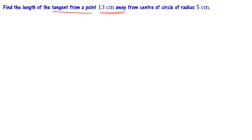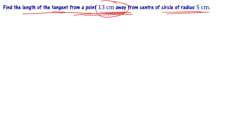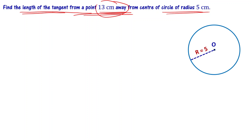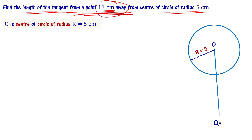Now look at the second problem: find the length of the tangent from a point 13 centimeters away from the center of a circle of radius 5 centimeters. We have a circle centered at O with radius r equal to 5 centimeters, and we mark a point Q that is 13 centimeters away from O, so OQ equals 13 centimeters.